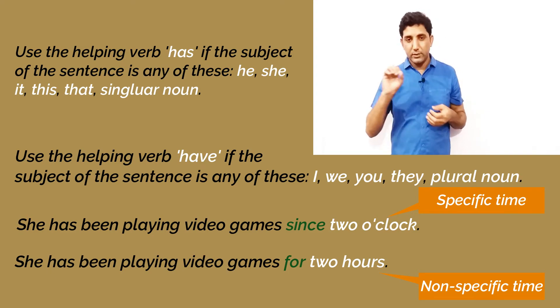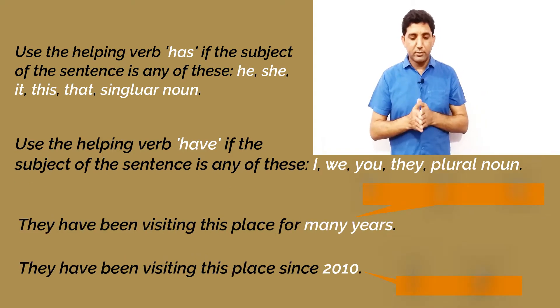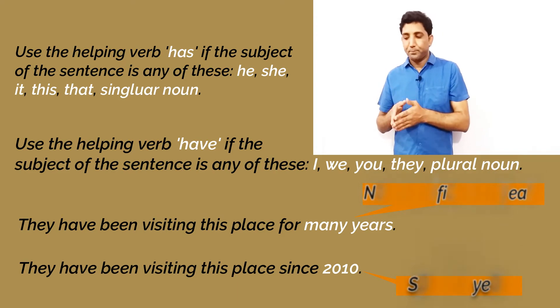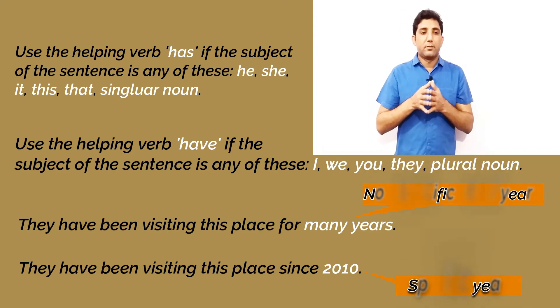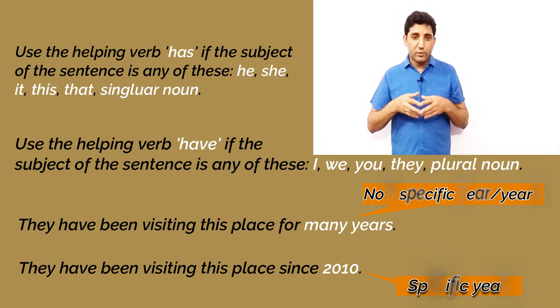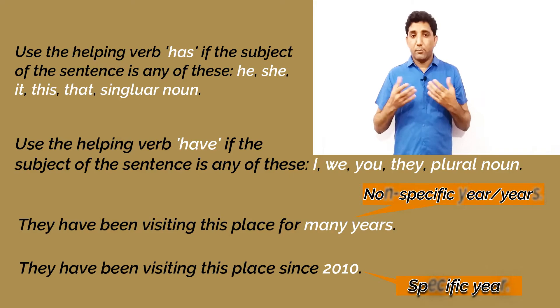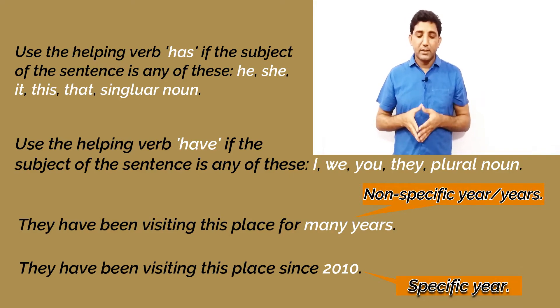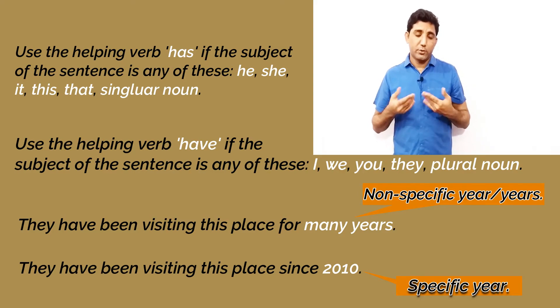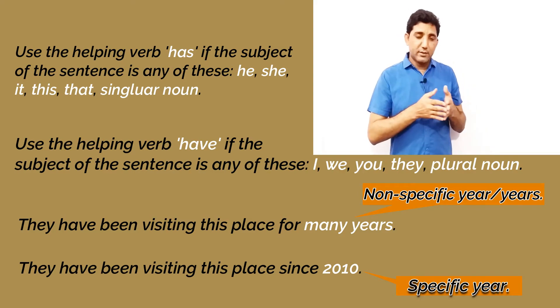Let's take another example with the subject 'they'. They have been visiting this place for many years — that's a period of time. If we talk about a point in time using a year, we would say: they have been visiting this place since 2010.